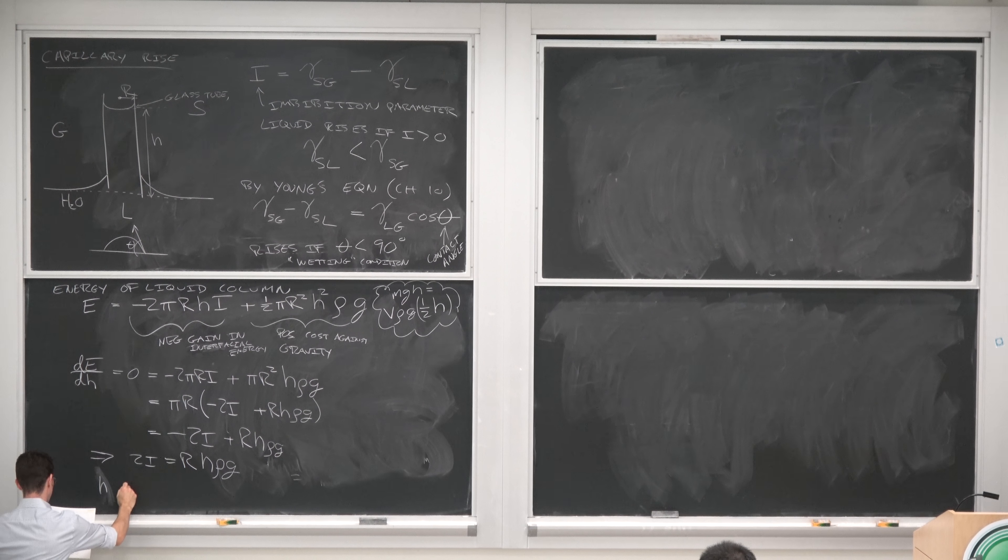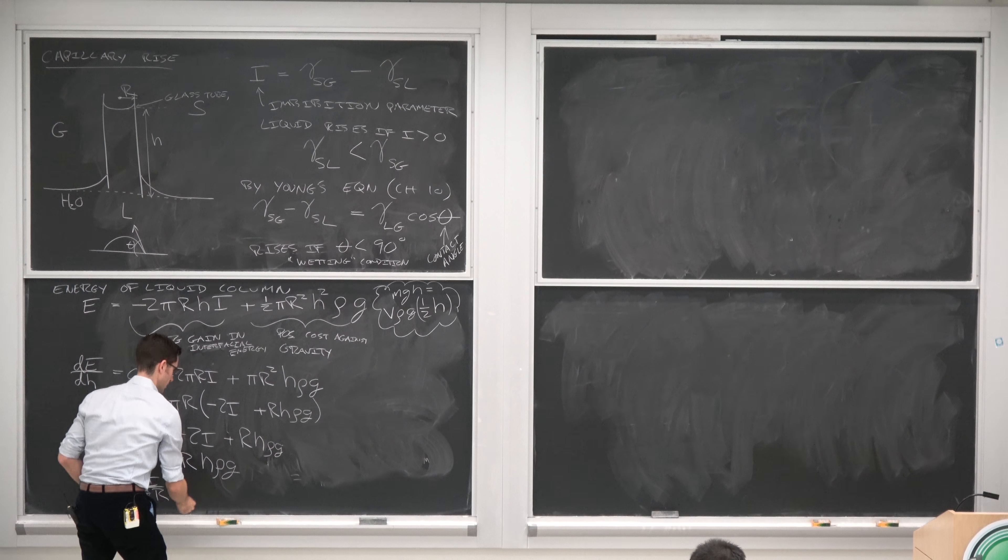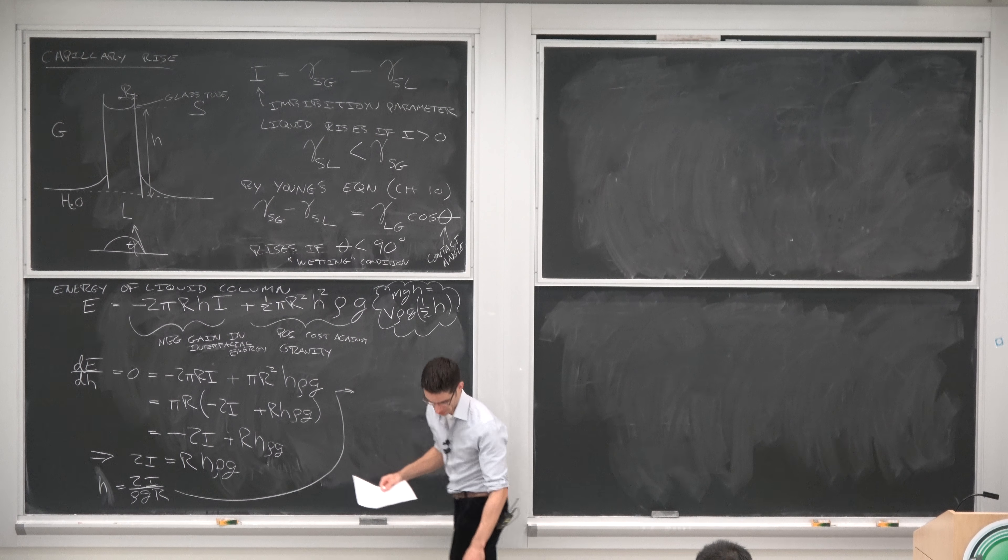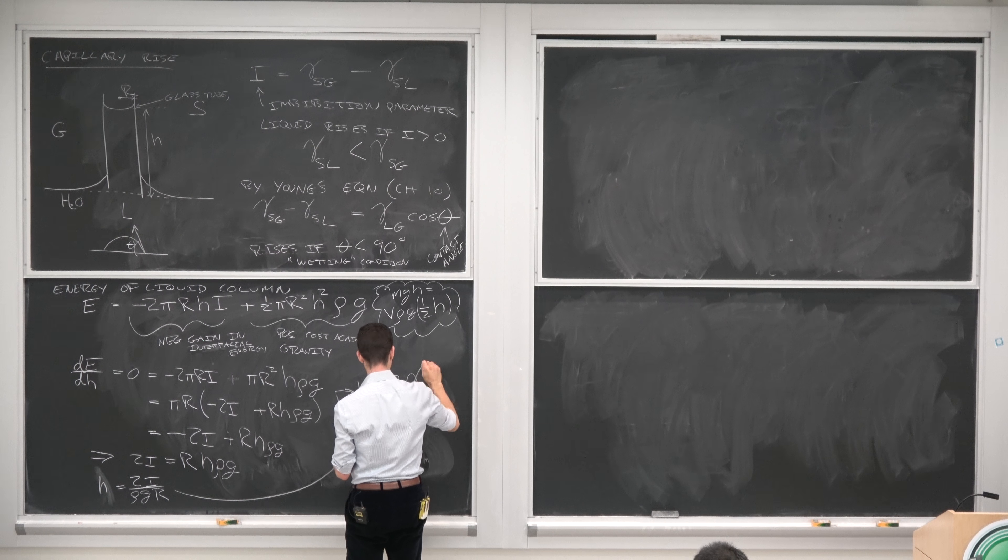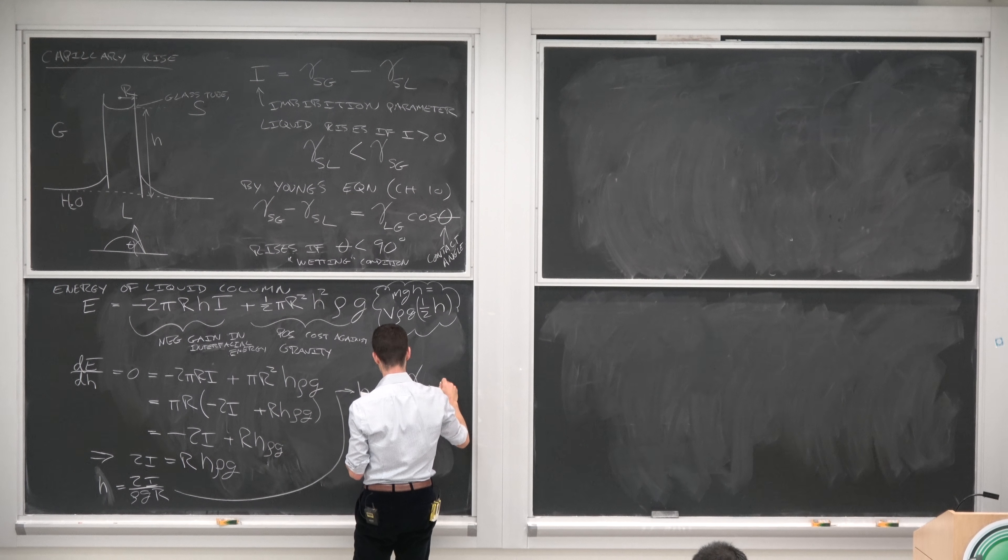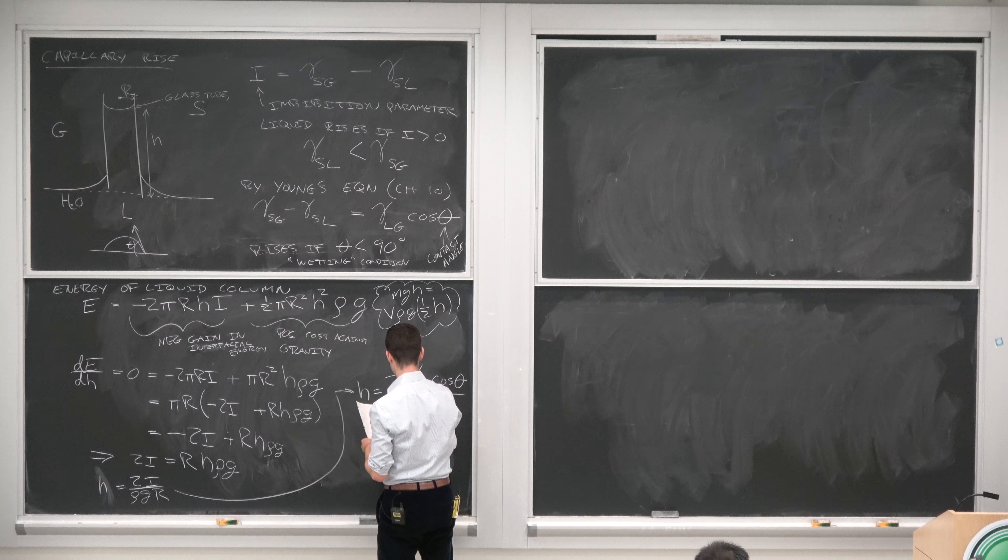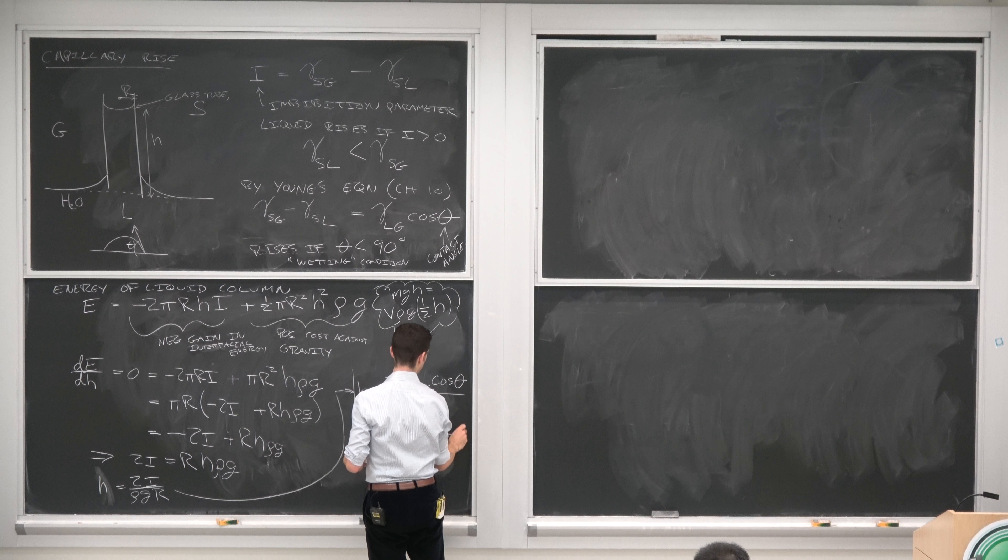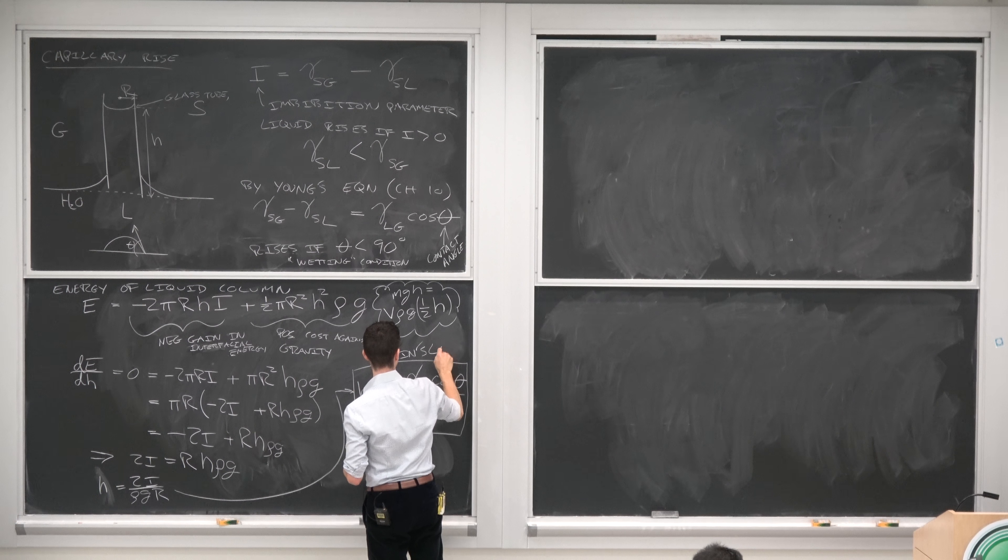H equals 2 I over rho G R, or usually this is written by substituting Young's equation in for I. So H equals 2 gamma liquid-gas, which is the surface tension, times cosine theta, which is the contact angle, over rho density of the liquid, G acceleration due to gravity, and R the radius of the cylinder. And this is called Jurin's Law.